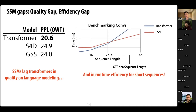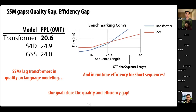The other issue is that although state space models asymptotically scale better than attention, for short sequences they actually run slower. For most standard language model training at sequence lengths like 2k, this means the theoretically more efficient model is actually going to be slower in practice. Our goal is to close both the quality gap and the efficiency gap.